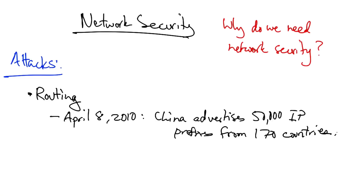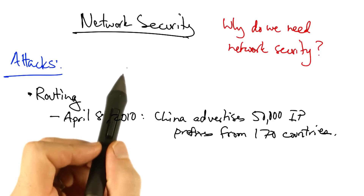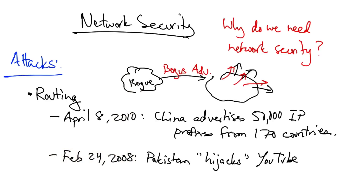Effectively, the border gateway protocol essentially allows any AS to advertise an IP prefix to a neighboring AS, and that AS will typically just believe that route advertisement and advertise it to the rest of the internet. These events, where an AS advertises a prefix that it does not own, are called route hijacks, and they tend to occur more often than one might expect.